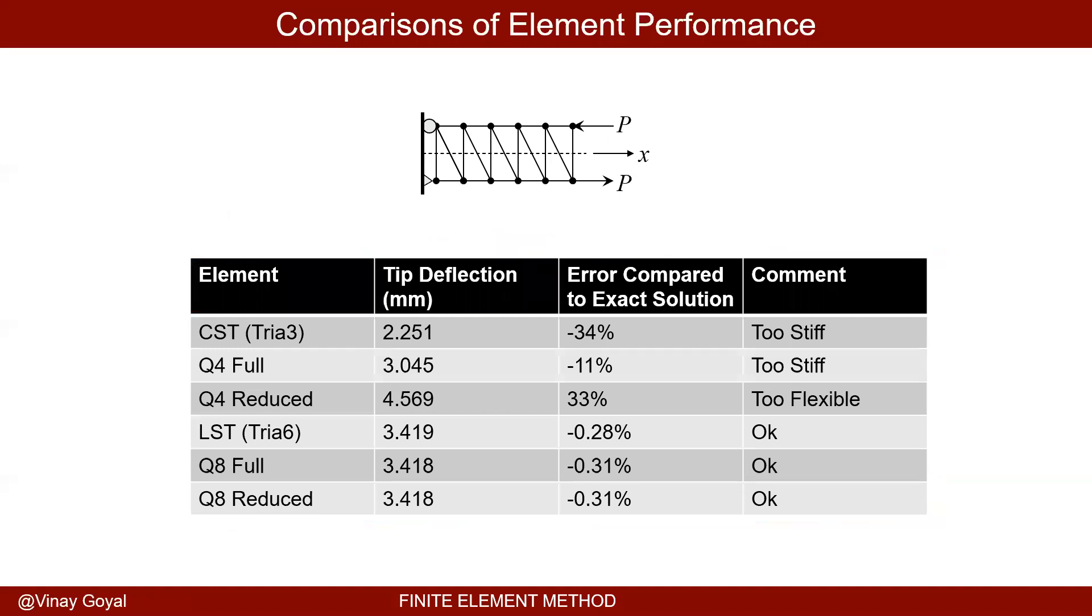I'm just showing you here really quick the tip deflection compared to the error that you get against the exact solution. So the CST triangular element, 34% error, too stiff. The Q4 full integration element is only 11% off but it's still too stiff.